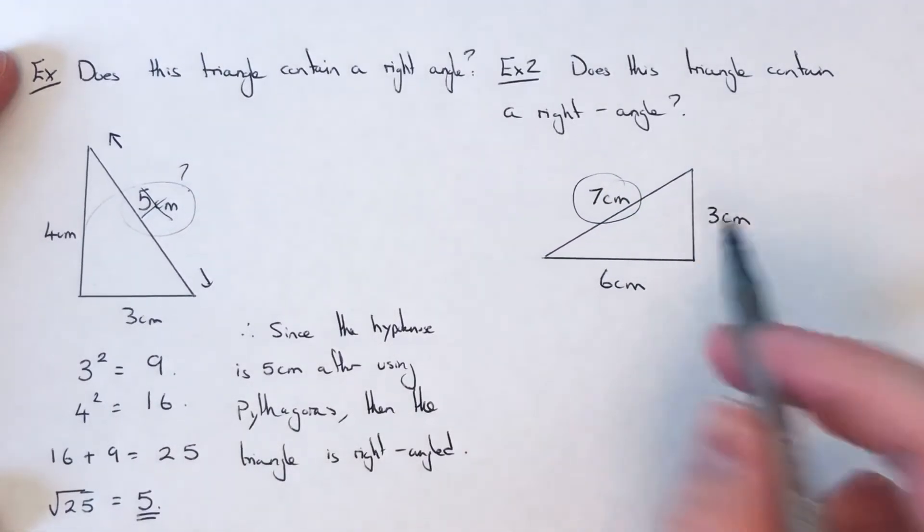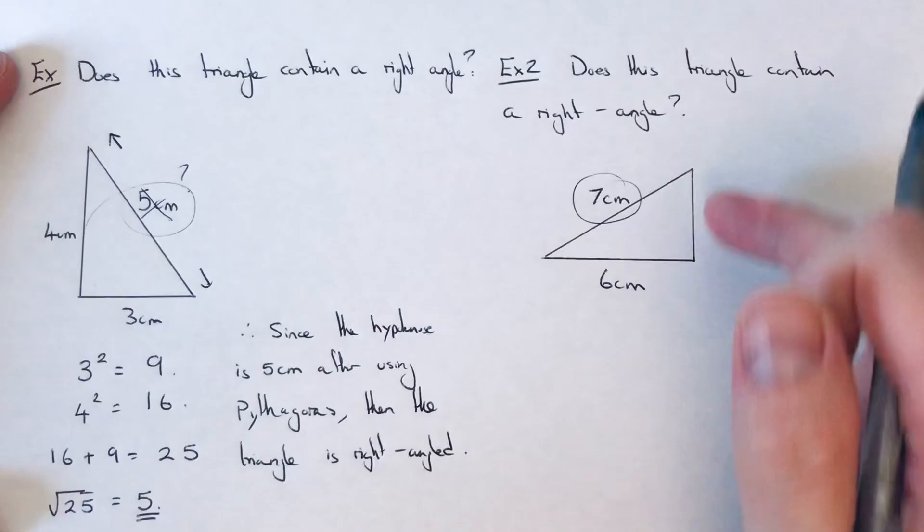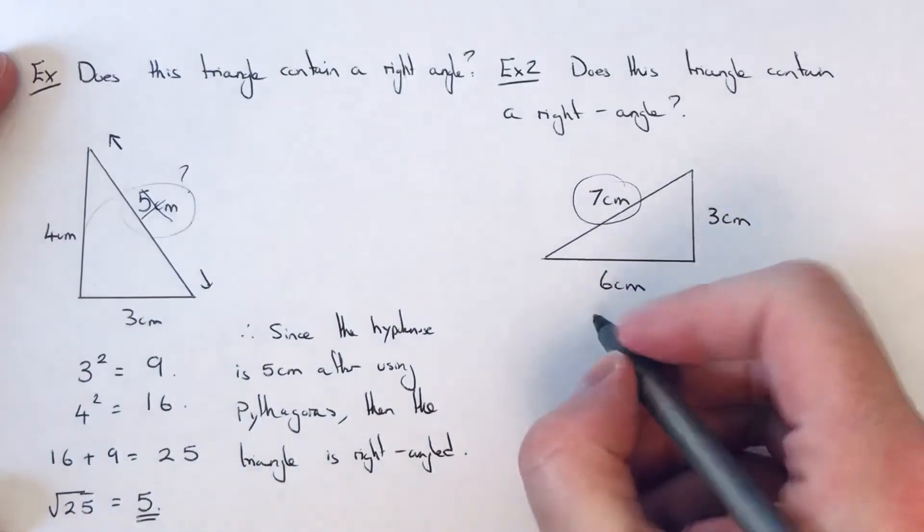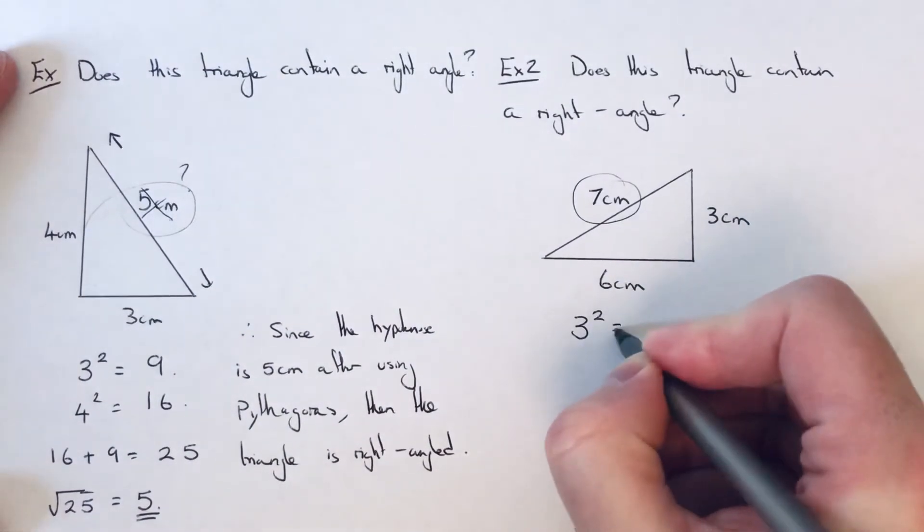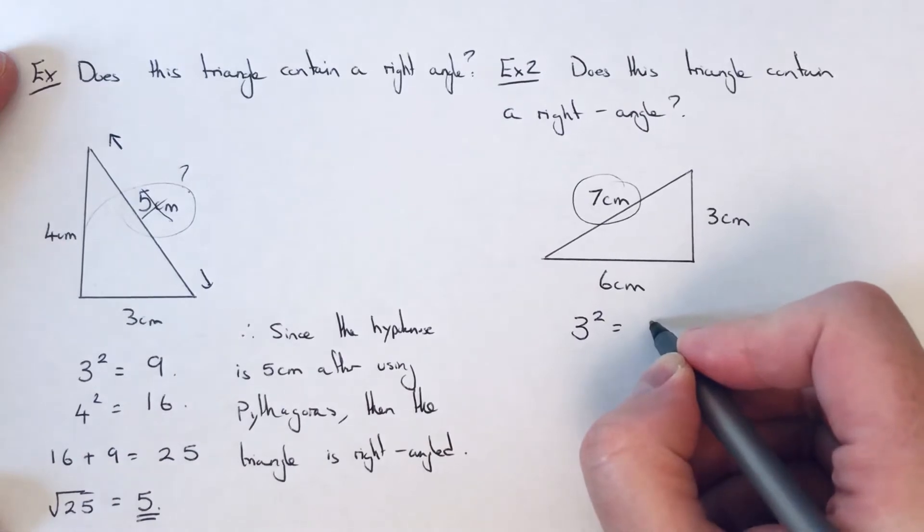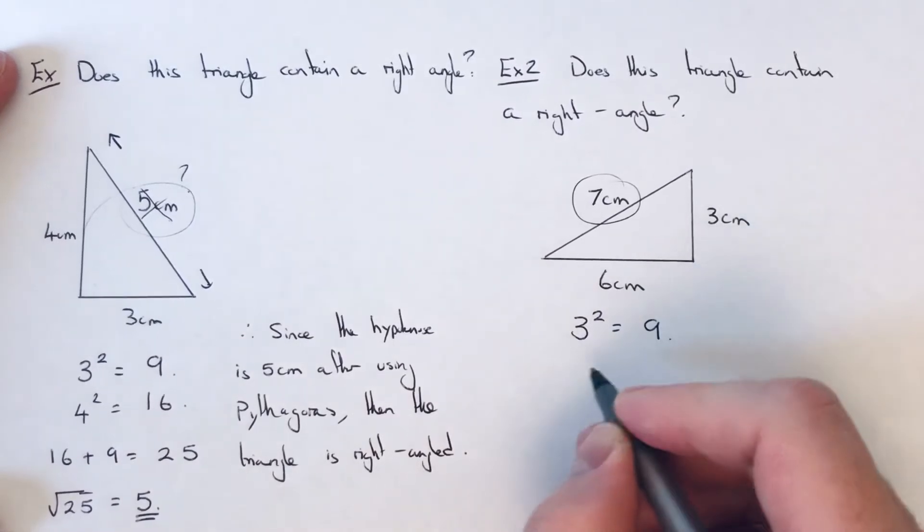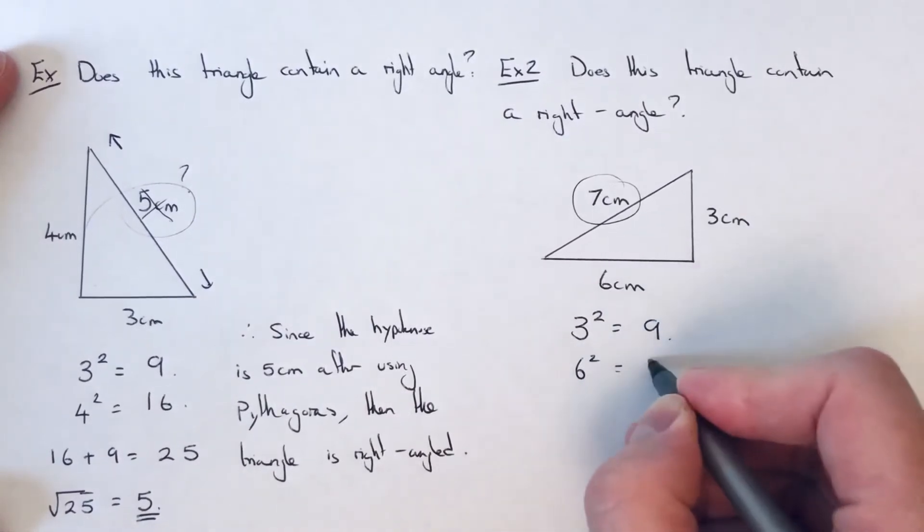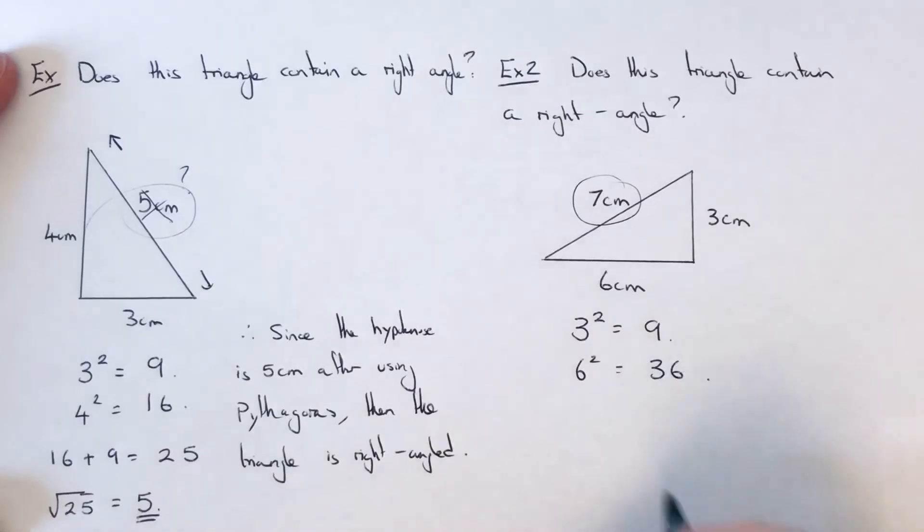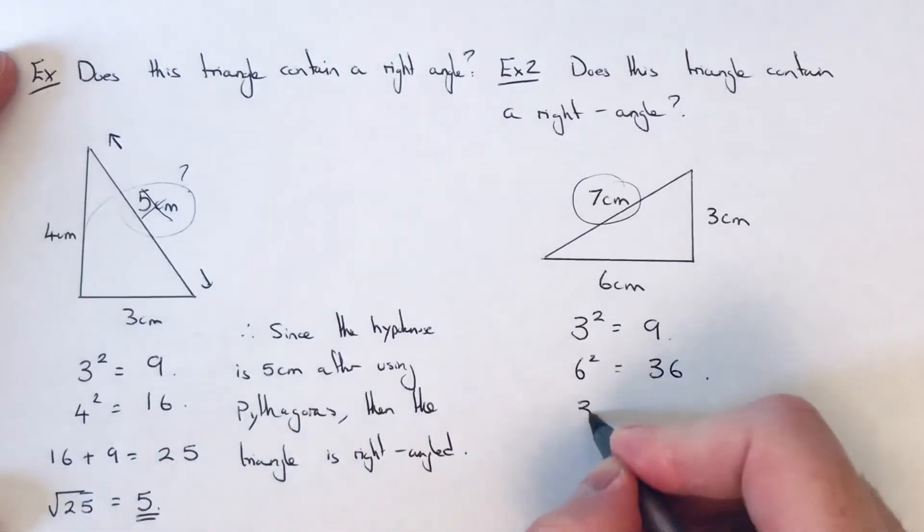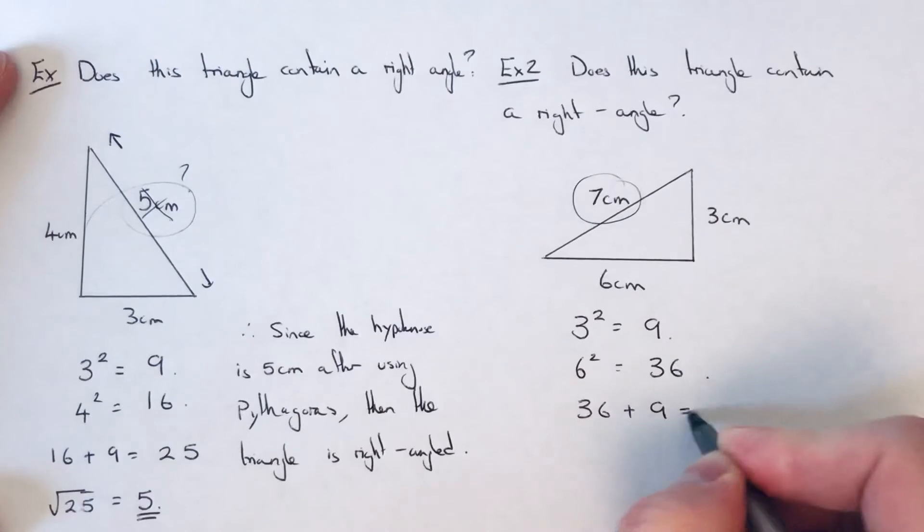Again, we just ignore the hypotenuse of 7, ignore that one, and we're just going to work out what it would be if the other two sides are 3 and 6. So again, if we square the side, 3 squared is 3 times 3, which is 9. 6 squared is 6 times 6, which is 36.